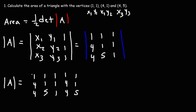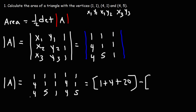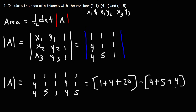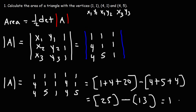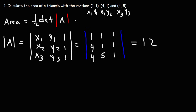Starting from the top left we multiply these three numbers: 1 times 1 times 1 is 1. Then 1 times 1 times 4 is 4, so plus 4. Then 1 times 4 times 5 is 20. Next, starting from the bottom left, we multiply: 4 times 1 times 1 is 4, 5 times 1 times 1 is 5, and 1 times 4 times 1 is 4. So 1 plus 4 plus 20 is 25, minus 4 plus 4 plus 5, which is 13. The determinant is 12.